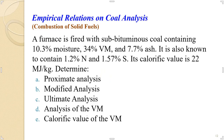For this video, let's solve some combustion of solid fuels using empirical relations and coal analysis. The problem is: a furnace is fired with sub-bituminous coal containing 10.3% moisture, 34% volatile combustible matter, 7.7% ash. It is known to contain 1.2% nitrogen and 1.57% sulfur. Its calorific value is 22 megajoules per kilogram.